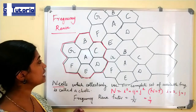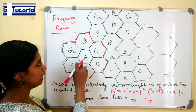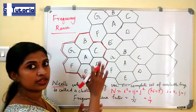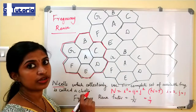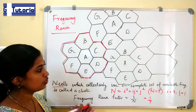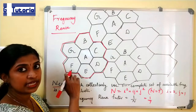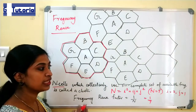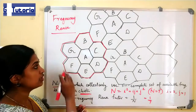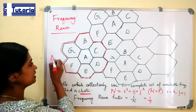To illustrate frequency reuse, consider seven different channels: A, B, C, D, E, F, G, reused across a geographical area so there is no interference between cells using the same channel. The N cells which collectively use the complete set of frequencies are known as a cluster. Here the cluster size N equals 7, and each cell is allocated one-seventh of the total available frequencies. The frequency reuse factor is given by 1/N, that is 1 over the cluster size.